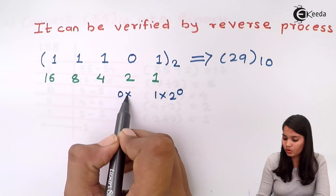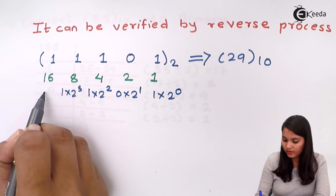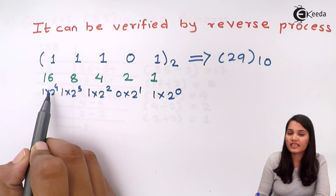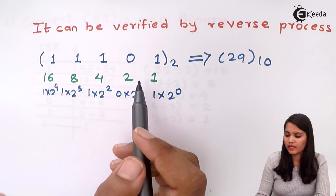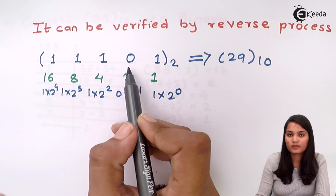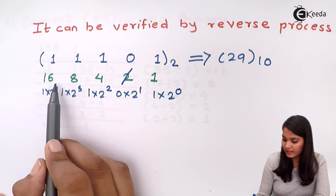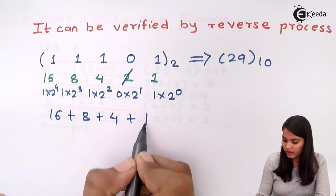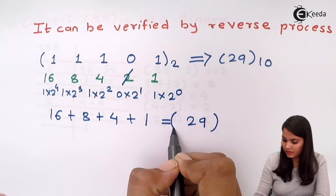Then 1 × 2 raised to 2, 1 × 2 raised to 3, and 1 × 2 raised to 4. The highest power of 2 will always be the MSB — that is the leftmost value. The 0 weightage value will be cancelled out. So the remaining values are 16, 8, 4, and 1. Adding 16 + 8 + 4 + 1 gives us 29 in decimal. So this is how you verify the binary to decimal conversion.